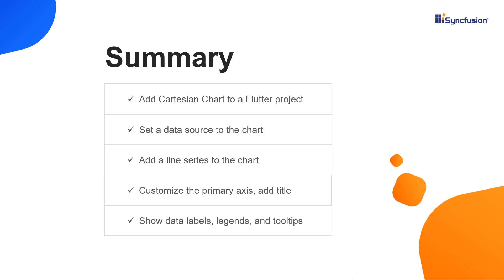That's it. Let me summarize the main points of this video. You saw how to add the Syncfusion Flutter charts widget to a Flutter project. You learned how to set a data source to the chart and then plot the data as a line series. You also learned how to customize the primary axis, add a title, and show data labels, legends, and tooltips in the line chart. You can download this working example from the GitHub link and documentation link in the video description below. You can also check whether you are eligible for our community license, which gives you a free license key to use our Flutter products. If you found this video useful, click the like button and subscribe to our channel to get notifications about new videos. Thanks for watching.